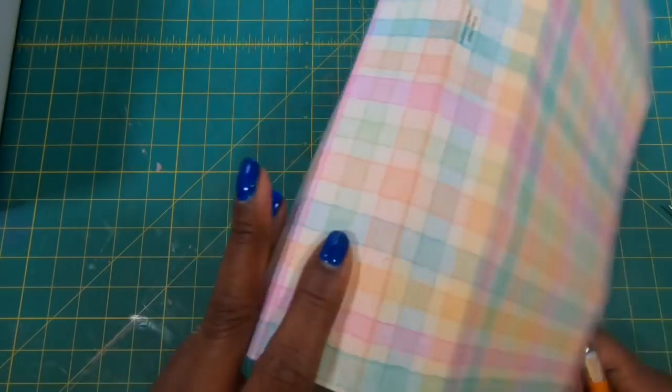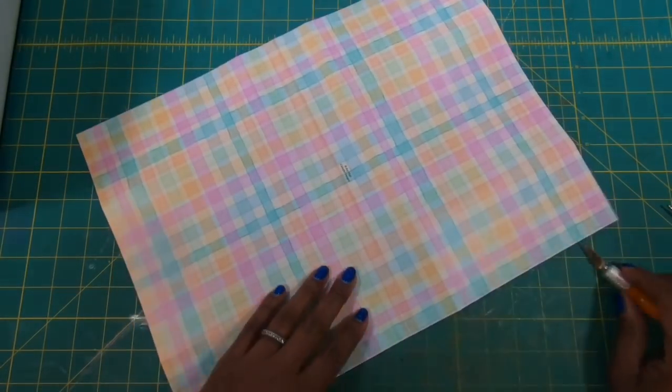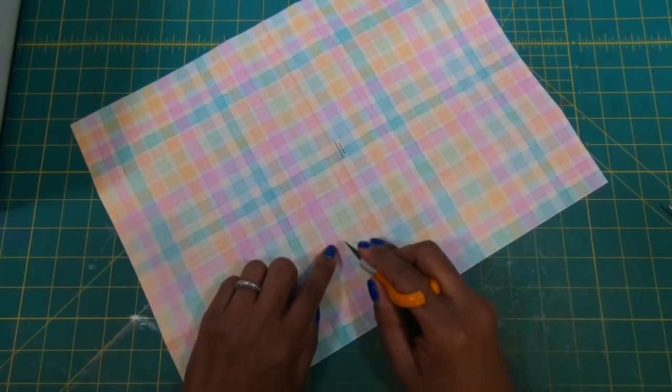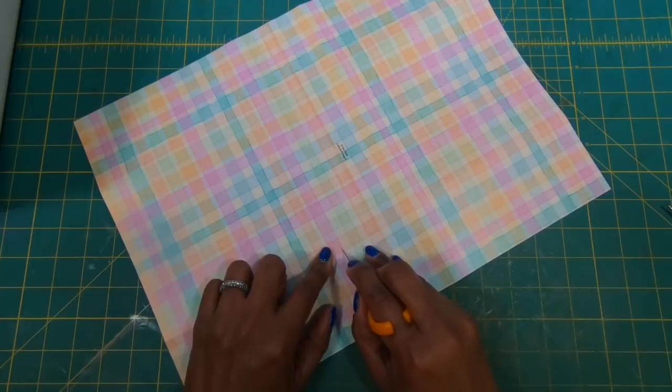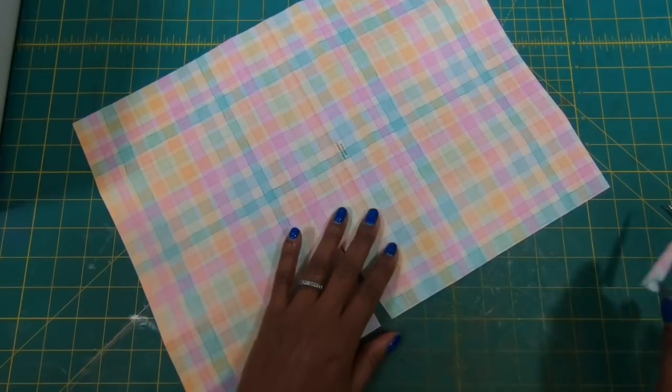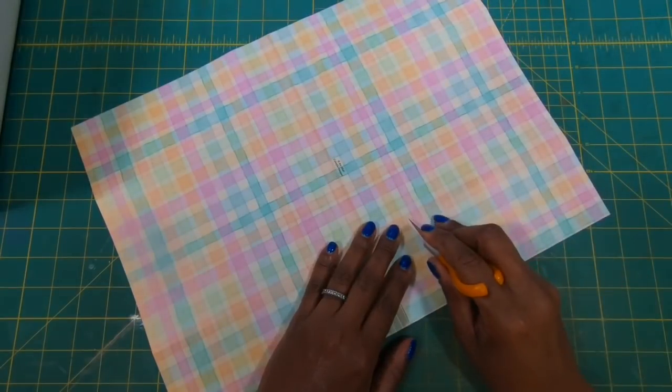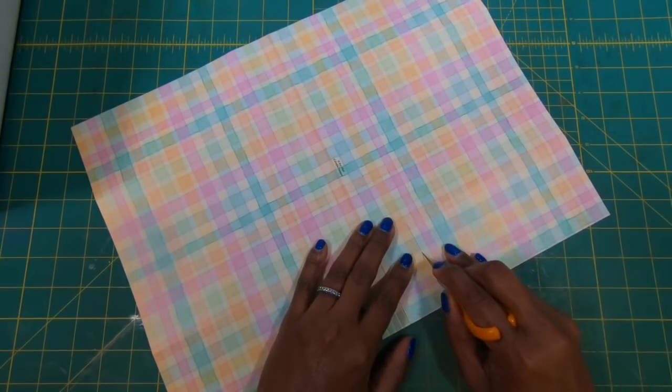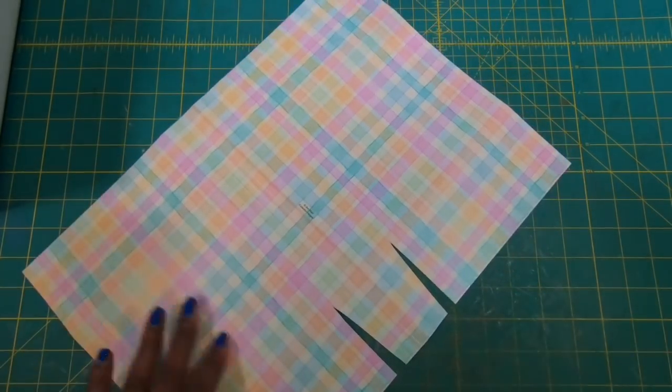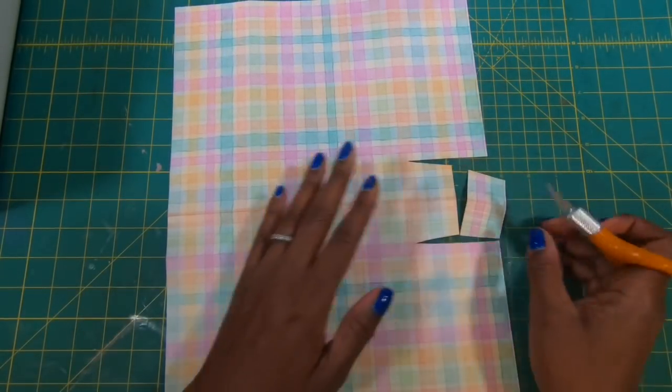So now what I am going to do is this is my center right here. So I have these two tabs and I am simply going to go up to the score mark, the intersecting score mark, and I am going to drag down and then I'll cut in just a little bit. And I'll do that over here as well and then I am going to reduce this down to about half of the size.